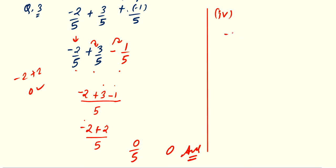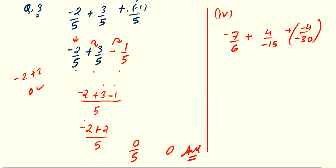Which is minus 7 by 6 plus 4 upon minus 15 plus minus 4 upon minus 30. So, just remember whenever you are having negative signs in numerator and denominator, that means you have to cancel these signs. So, first you have to write minus 7 by 6. Now, convert this in a standard form. This negative we have to shift to numerator.